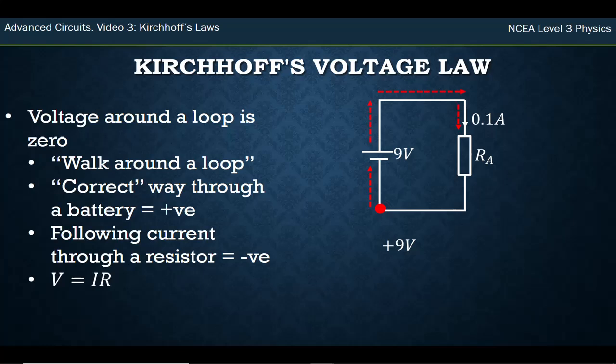It goes right around the circuit back into the negative. So because we're going the correct way through a battery, we've got a positive 9 volts. We keep going around the loop until we hit the next component which is a resistor, and we are following that current, going the same direction as the current through the resistor, so it's negative. It's negative the voltage that's been dropped over that resistor. Keep going around, we get back to where we started.